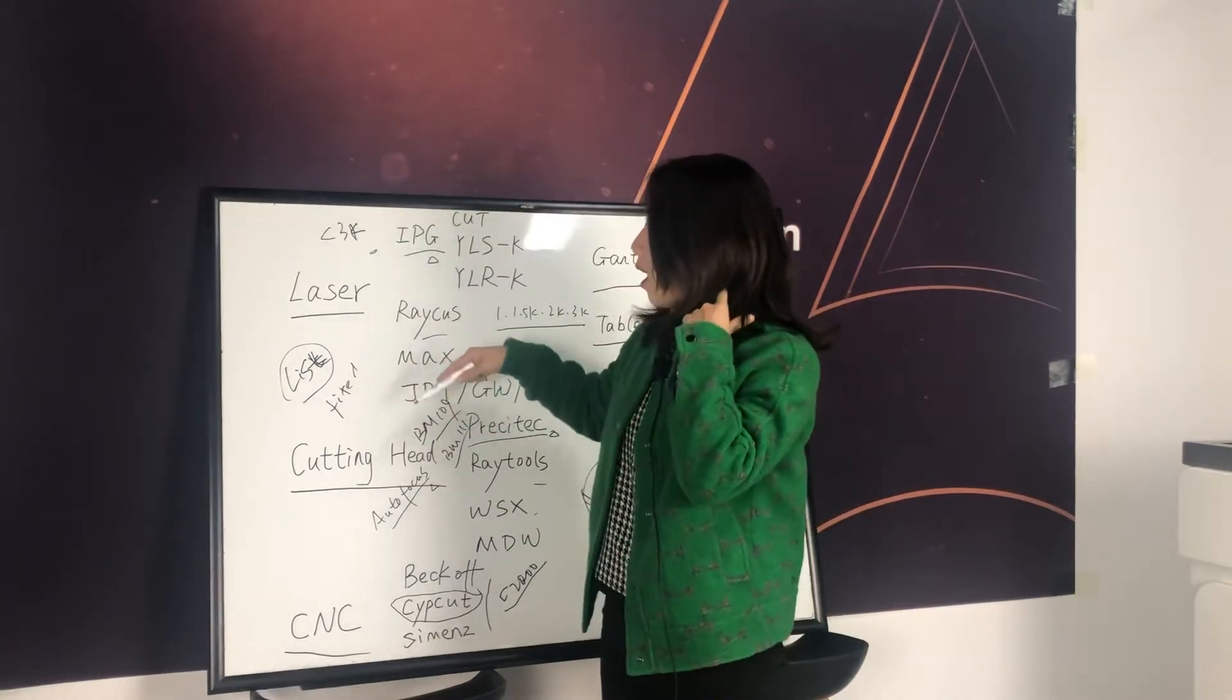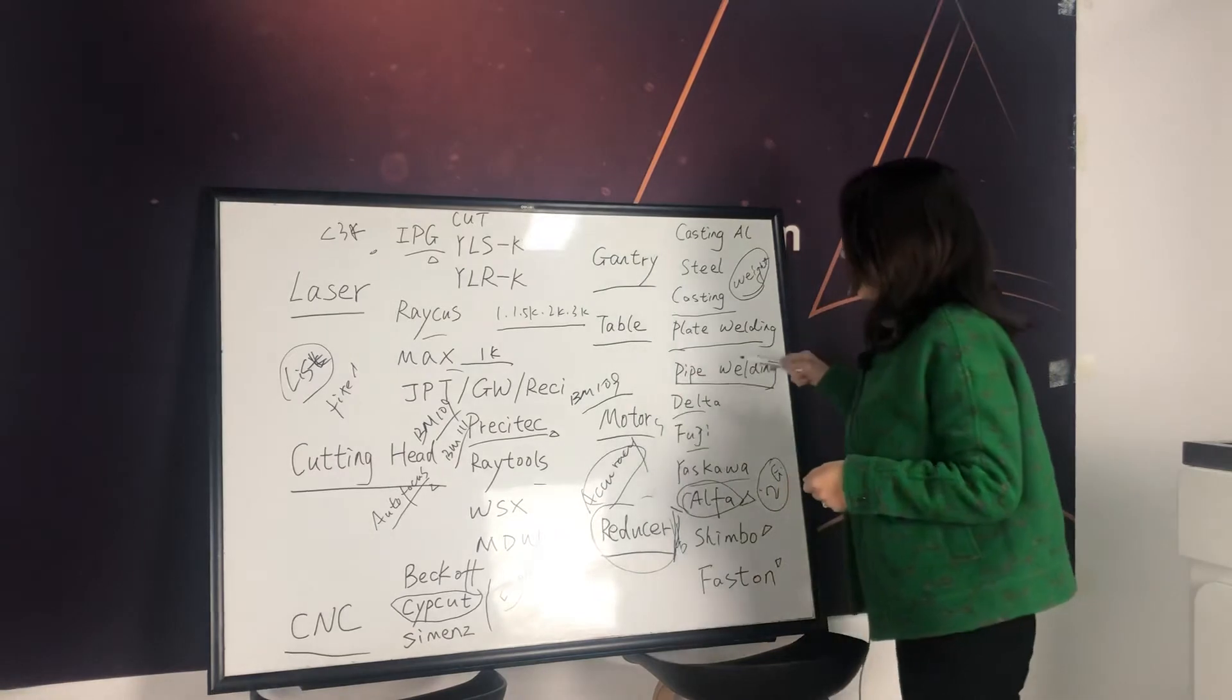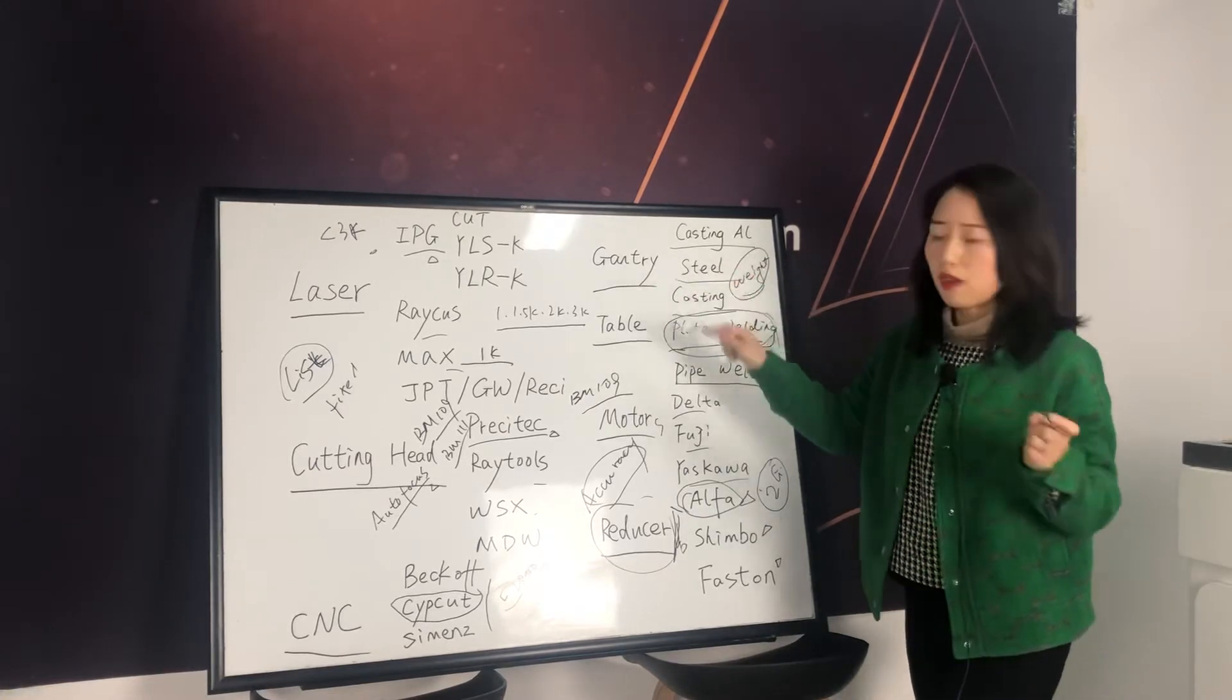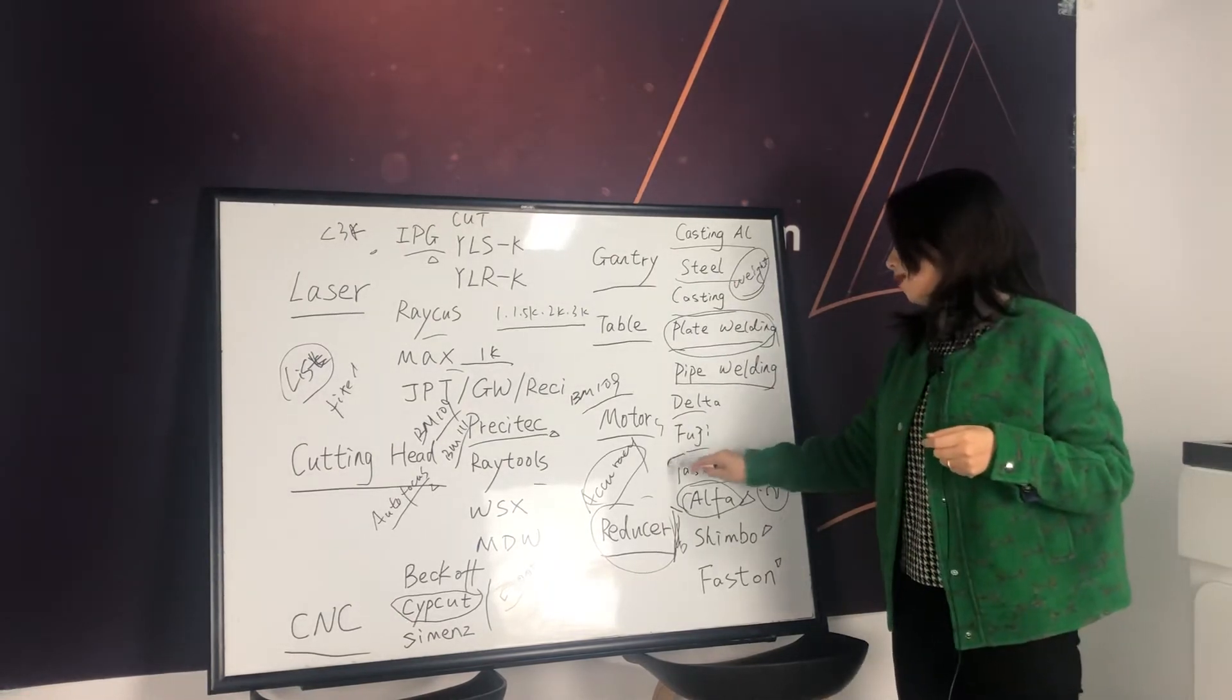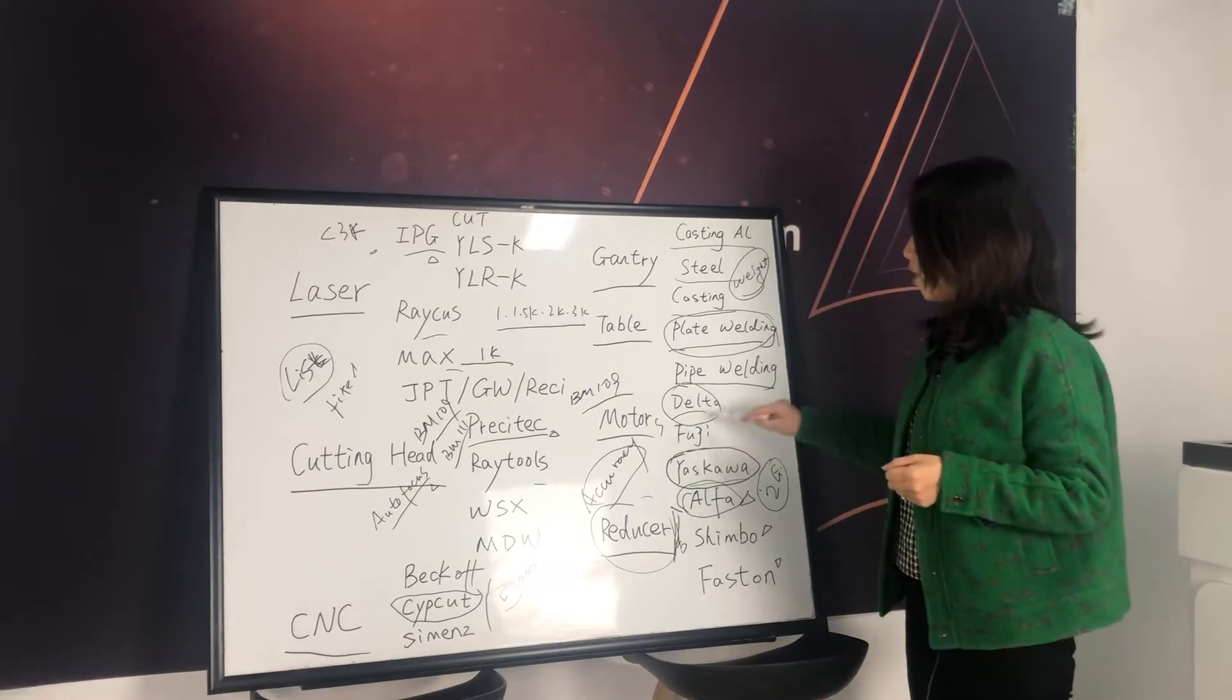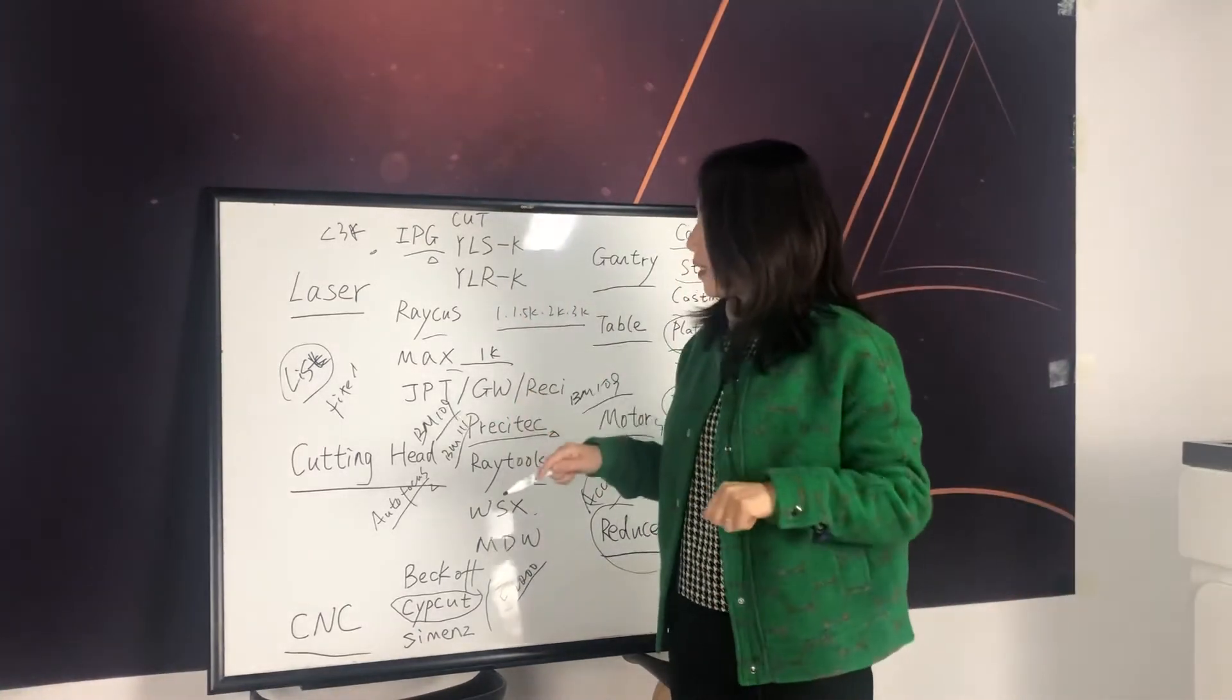People think I have decided to use a Maxx laser and Cypcut and a cutting head BM109. And I want plate welding. Maybe normally they don't emphasize this too much. Casting gantry or steel gantry, both options. They don't care. Motors, Yaskawa motors are quite famous, very famous. So people normally choose Yaskawa motors or Delta motors. Very similar price. And they will choose Shimpo reducer.